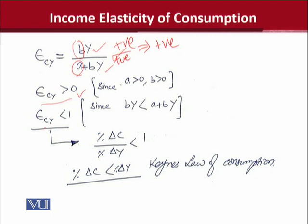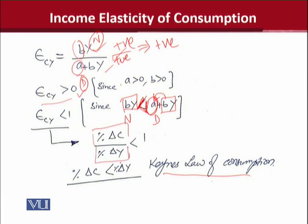Secondly, this value is less than 1. The answer will be less than 1. This means we verify Keynes' law of consumption - that the percentage change in C divided by the percentage change in Y is less than 1.